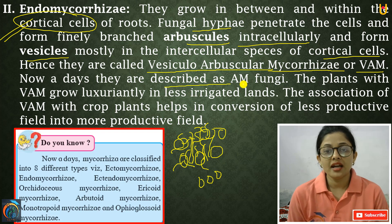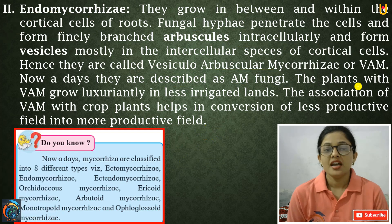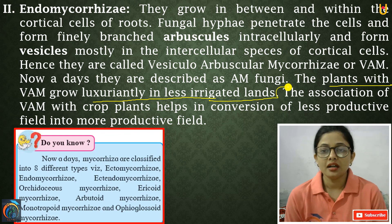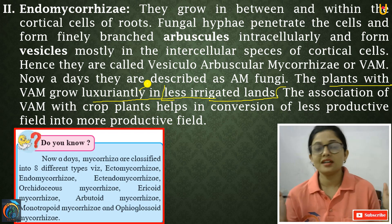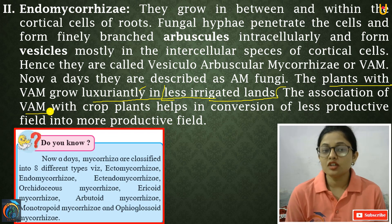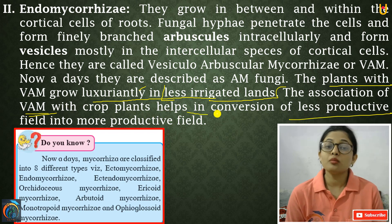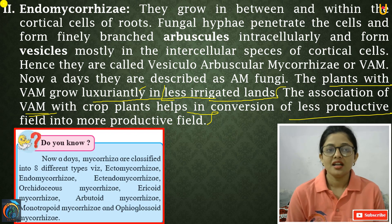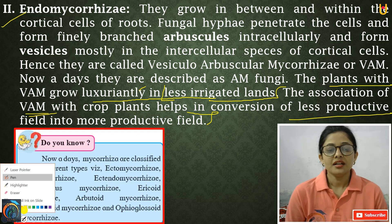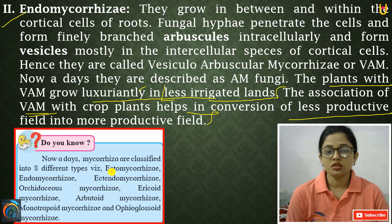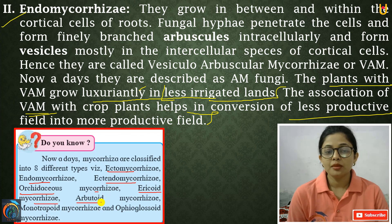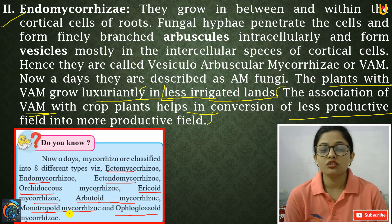This type is called Arbuscular Mycorrhizae, or VAM. Nowadays they are described as AM fungi. Plants with AM fungi grow luxuriantly even in less irrigated land. We now have eight different types of mycorrhizae discovered: ecto and endo, along with Ectendomycorrhizae, Orchidaceous Mycorrhizae, Arbutoid Mycorrhizae, Monotropoid Mycorrhizae, and Ophioglossoid Mycorrhizae.